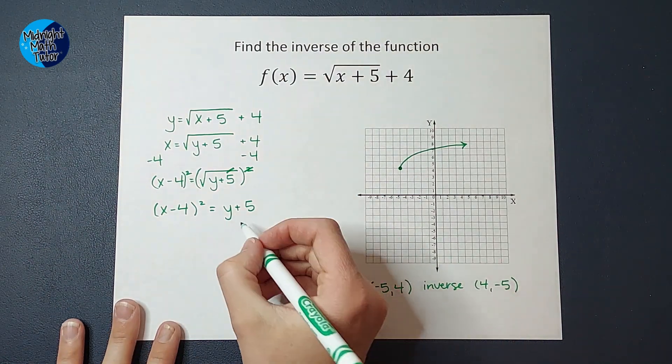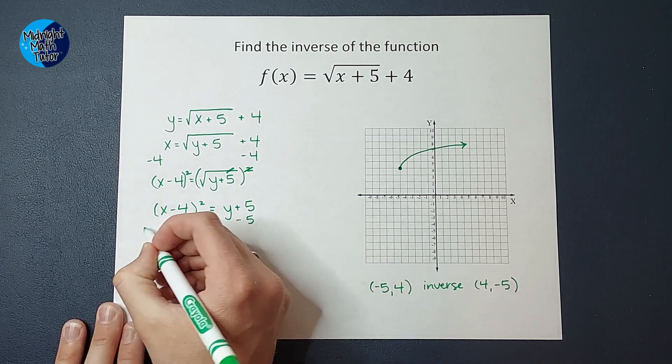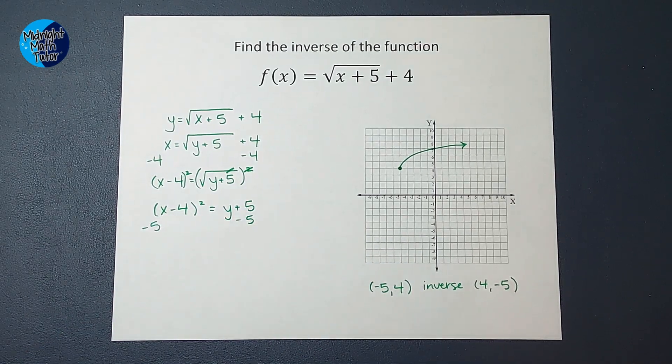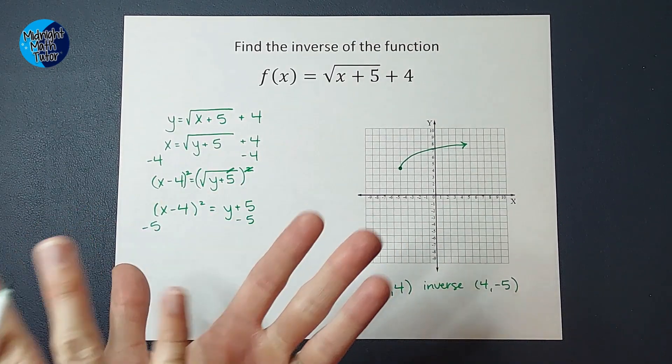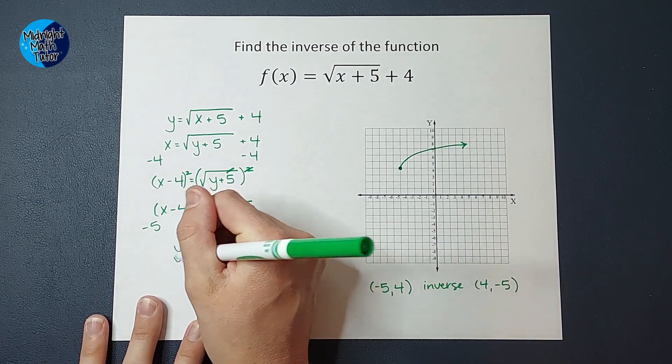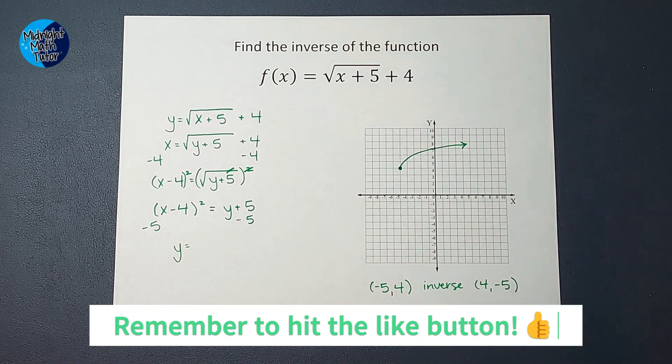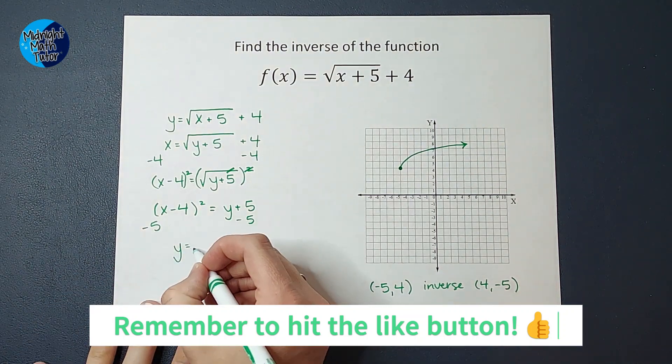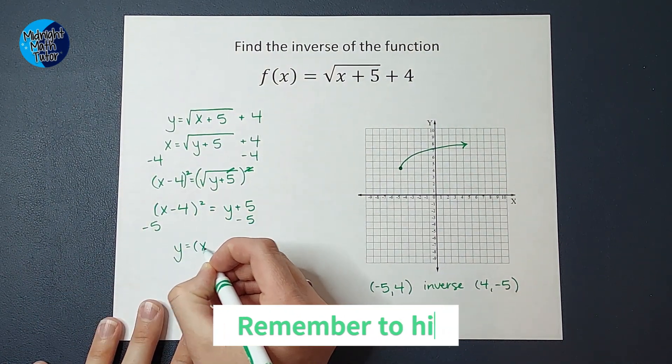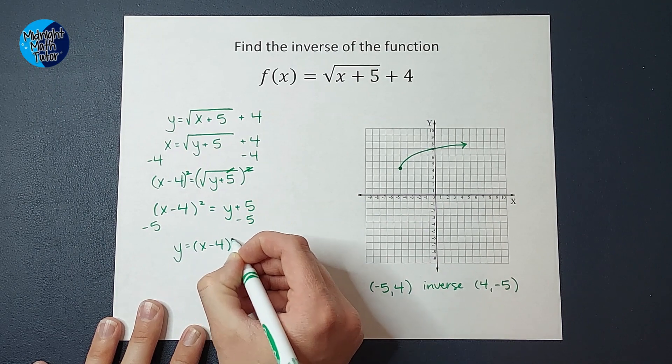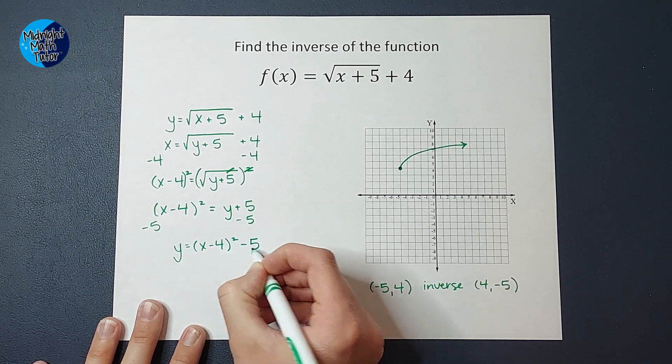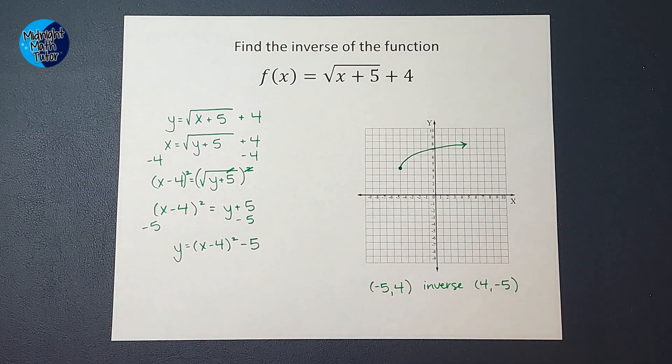So I am left with x minus 4 squared on this side equals y plus 5. Now I can subtract that 5 from both sides, and I end up with, I'm going to write the y first, I'm just swapping them so that y is first because that's how I'm more used to seeing equations, but I'm not changing the values or anything. So I end up with y equals x minus 4 squared minus 5. That is what I believe my inverse is.